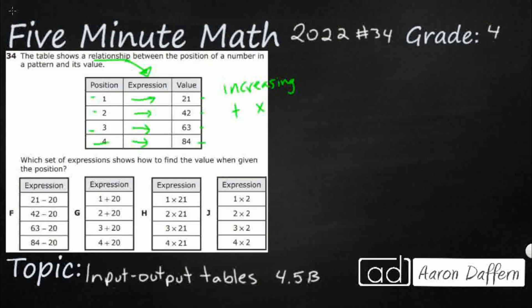Let's see if addition works. If I try the expression as position plus something equals the value, then 1 plus something equals 21, so that something is 20. Let's see if plus 20 works. It works for the first one, but it needs to work for all of them. 2 plus 20 is 22, but it's supposed to be 42. 3 plus 20 equals 32, but it's supposed to be 63. So plus 20 is not working.